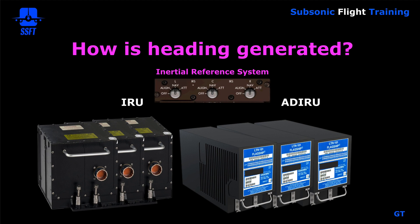How is heading generated in a jet? It's generated by the inertial reference system. Specifically, in the 747 you have three IRUs — inertial reference units — that supply heading. Or in some airplanes it'll be an ADARU, an air data inertial reference unit. In the 747-8 there are three of these; in some airplanes there are two. But in most cases you'll have two or three IRUs or ADARUs depending on the airplane.